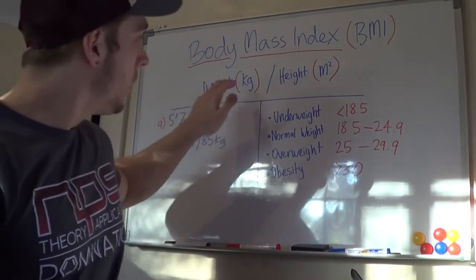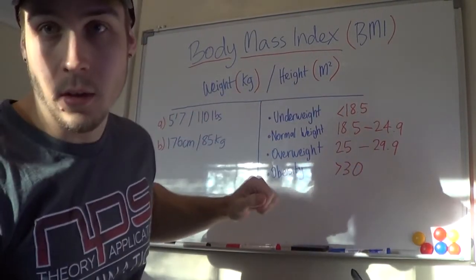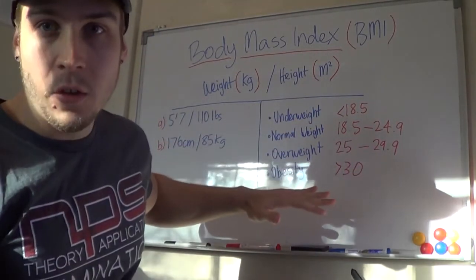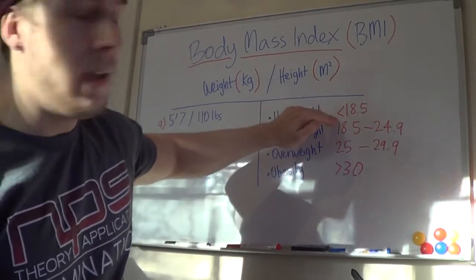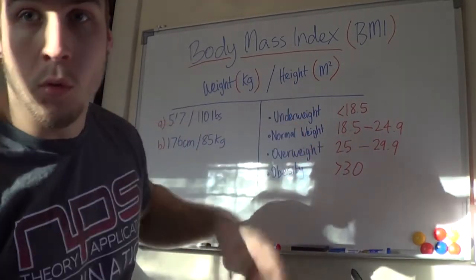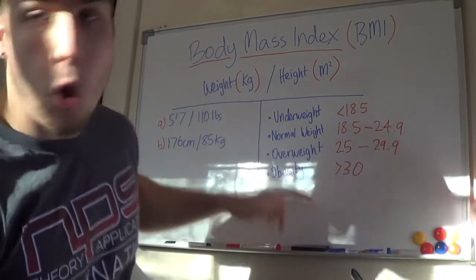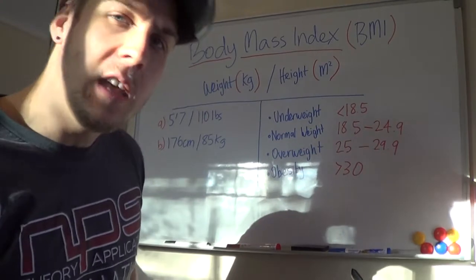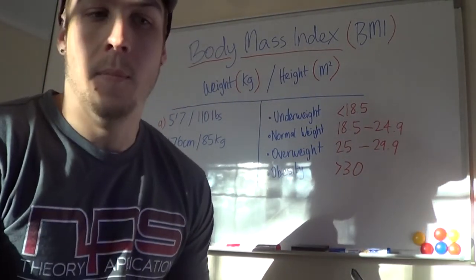Body mass index is essentially weight in kilograms divided by height in meters squared. There are four main categories: underweight is anything under 18.5, normal weight is 18.5 to 25, overweight is 25 to 30, and anything over 30 is considered obese.